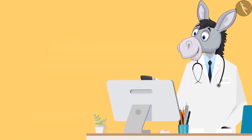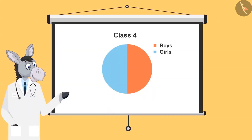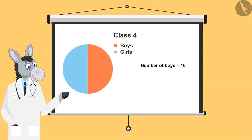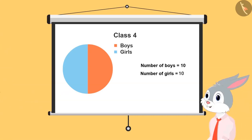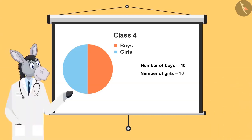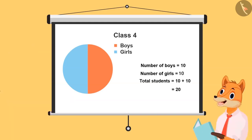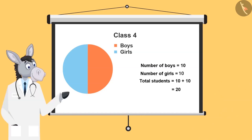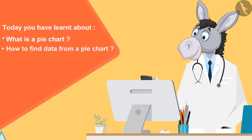Very good. Now look at this chart — if there are half boys and half girls in a class and the number of boys is 10, then what will be the number of girls? 10. Right. So what is the total number of students in the class? 10 and 10 is 20. Very good. So kids, today you have learnt about what is a pie chart and how to find data from a pie chart.